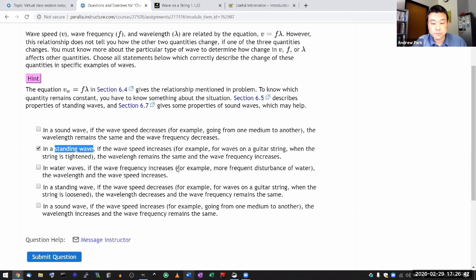In water waves, if the wave frequency increases, more frequent disturbance of water, then the wavelength and wave speed increases. Well, for one, I don't think wave speed will increase. So I'm just going to leave it. It's not correct. In a standing wave, if the wave speed decreases when the string is loosened, the wave speed, wavelength decreases, the wavelength remains the same. That was statistic. In a sound wave, if the wave speed increases, then the frequency remains the same and the wavelength would increase. Oh yeah, increase because one, that algebraic relationship and I'm trying to think of it in more conceptual idea that in the same amount of time, one period, it would travel a longer distance. So the wavelength would increase.